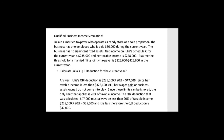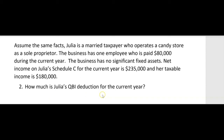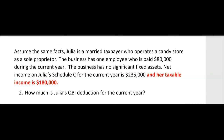Let's go on to number two: how much is Julia's QBI deduction for the current year? Same facts — she's married, operates a candy store as a sole proprietor, the business has one employee paid $80,000 in wages, and no significant fixed assets. Net income on Julia's Schedule C is the same $235,000 as in question one. But now her taxable income is $180,000 — not $278,000 as it was in the previous question.